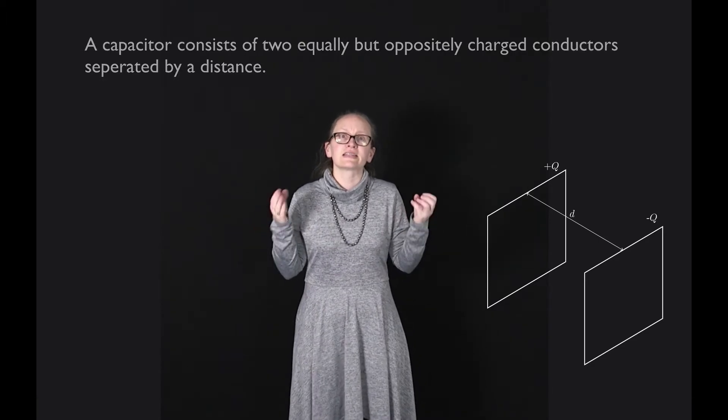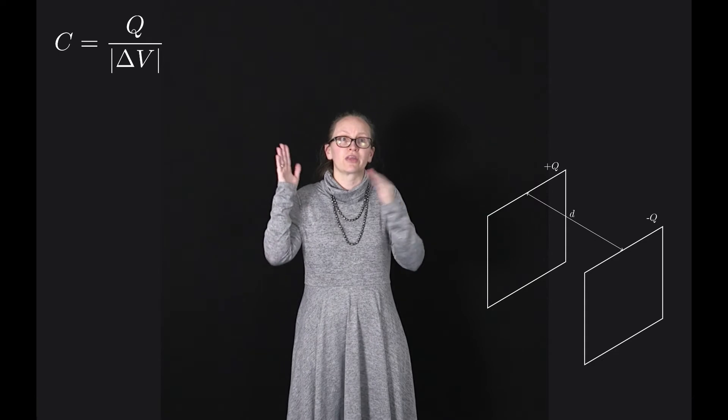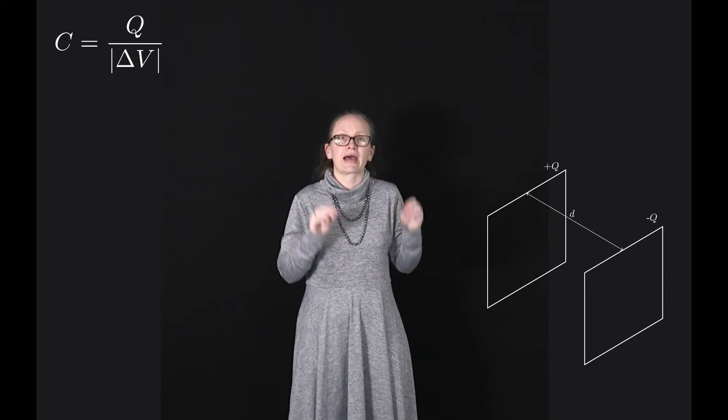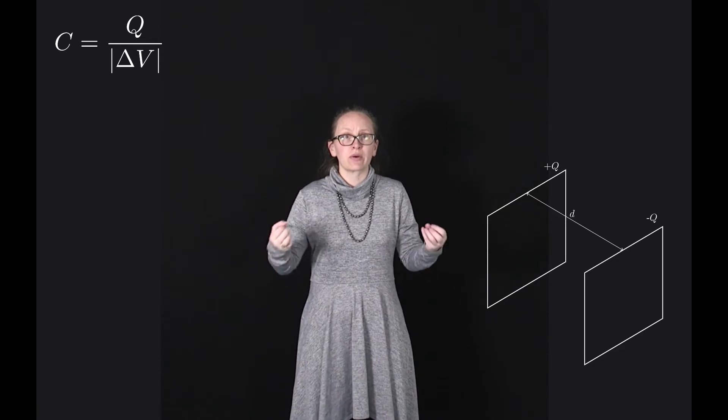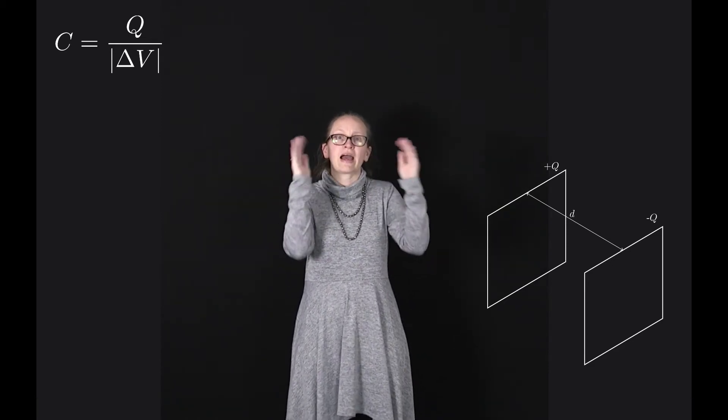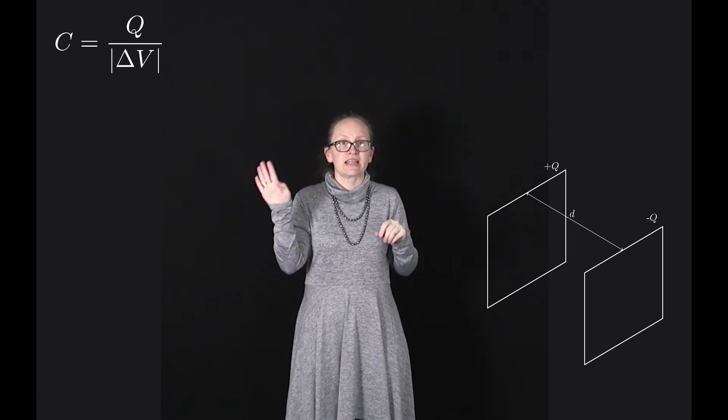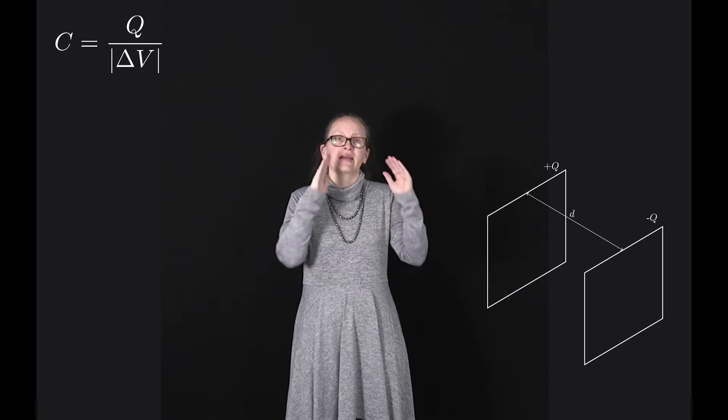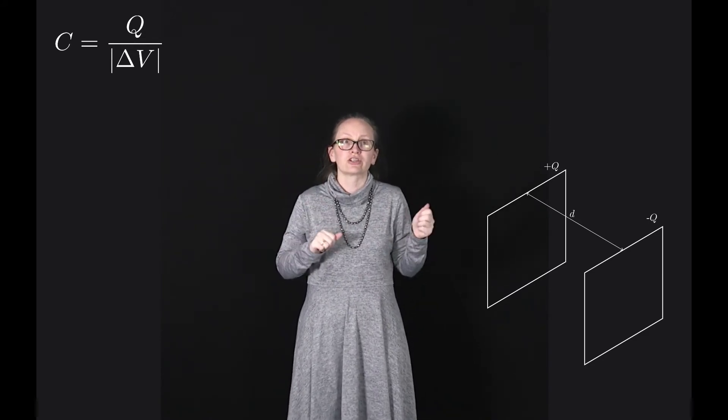The capacitance is defined as the ratio of the amount of charge on one of the conductors to the magnitude of the potential difference between them. As an equation we can write C is equal to Q over the absolute value of delta V. In this equation C is the capacitance, Q is the charge, and delta V is the potential difference between the two charges.